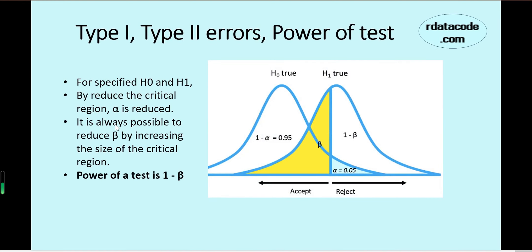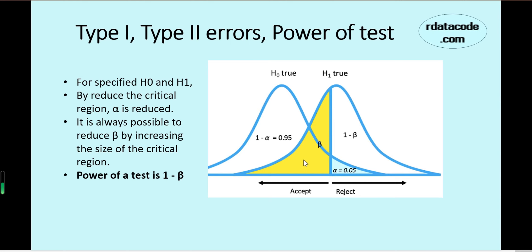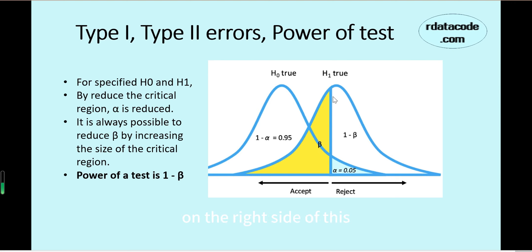Looking at this figure, we can see the H0 curve — if H0 is true, the random sample will follow this distribution curve. If H1 is true, the random sample follows the other curve. The vertical line represents the decision rule or critical line, set at 8 here. If we get fewer than 8 positives in a sample of 20, we do not reject H0. But if H1 is actually true, the left side of this decision line represents beta, the Type 2 error — shown as the yellow area.